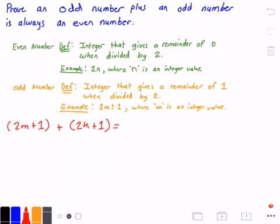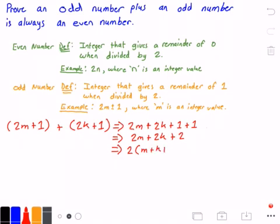Let's rewrite this. We get 2m plus 2k plus 1 plus 1, so that is 2 times m plus 2 times k plus 1 plus 1. Let's add some of these numbers together, so we get 2 times m plus 2 times k plus 2, which equals 2 times (m plus k plus 1).